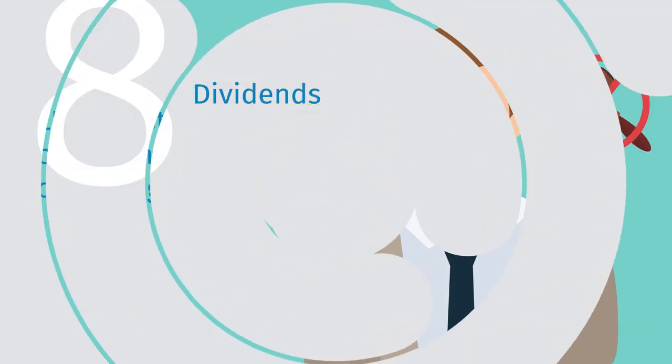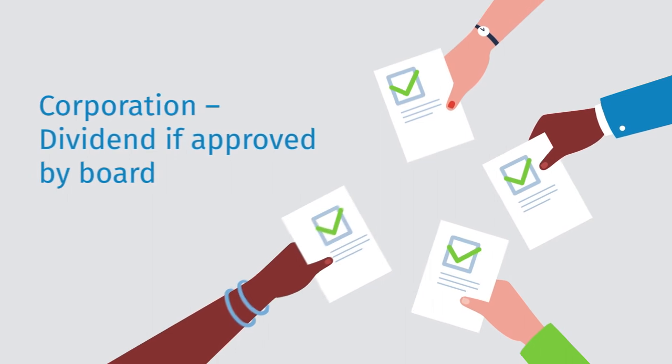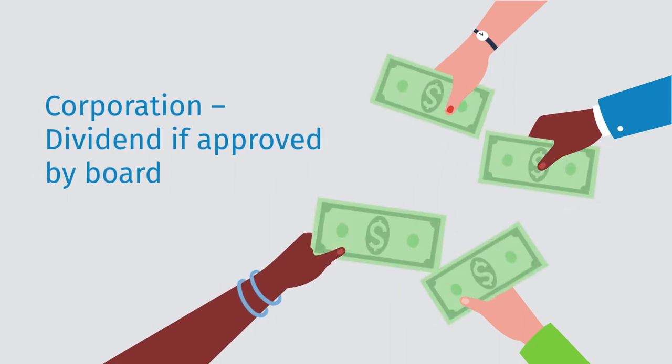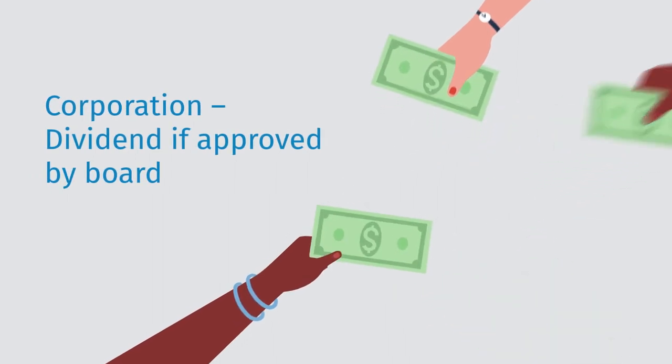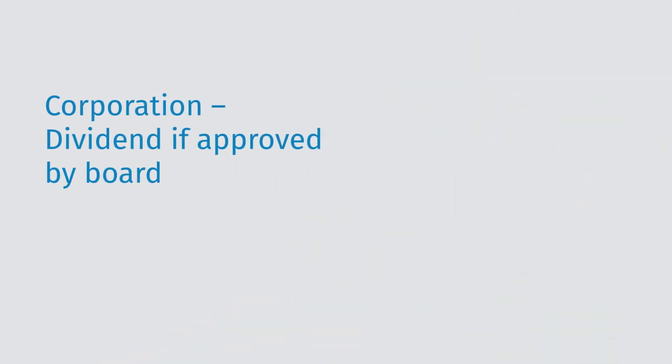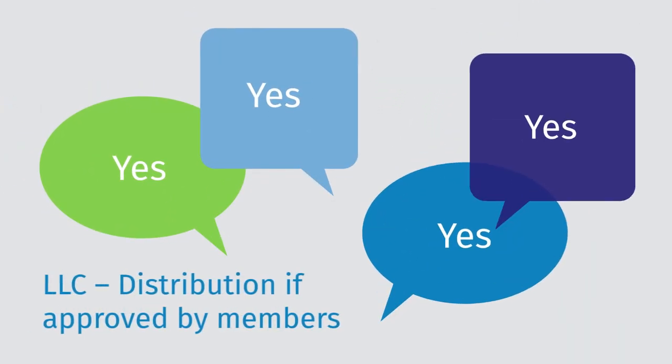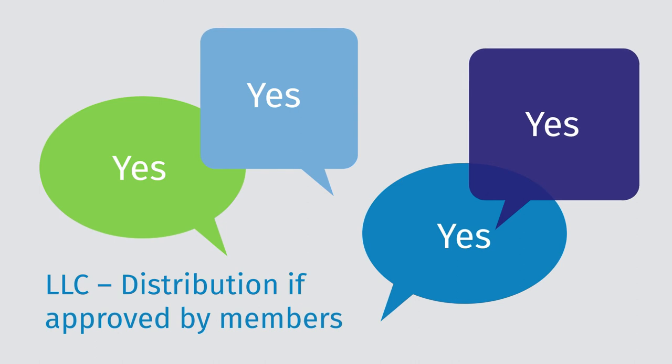Eight: a corporation's board of directors decides if and when a dividend will be declared. If approved by the members, a distribution may be issued by an LLC.